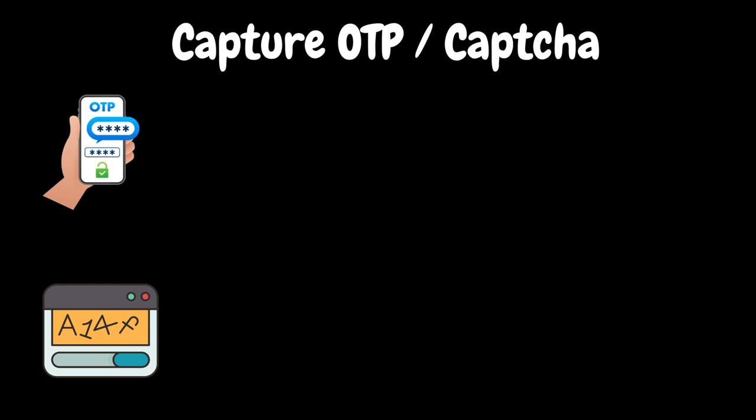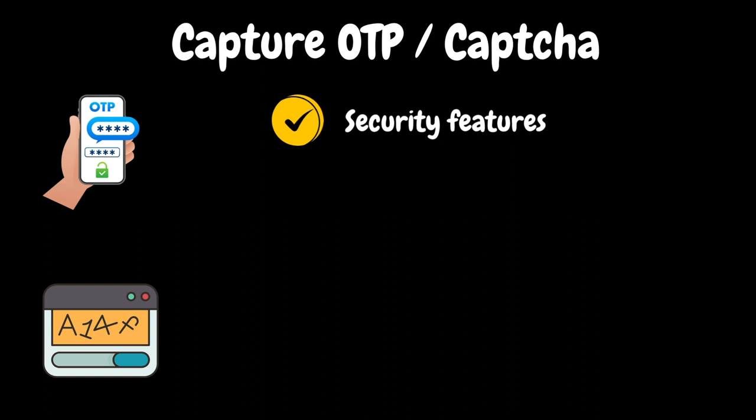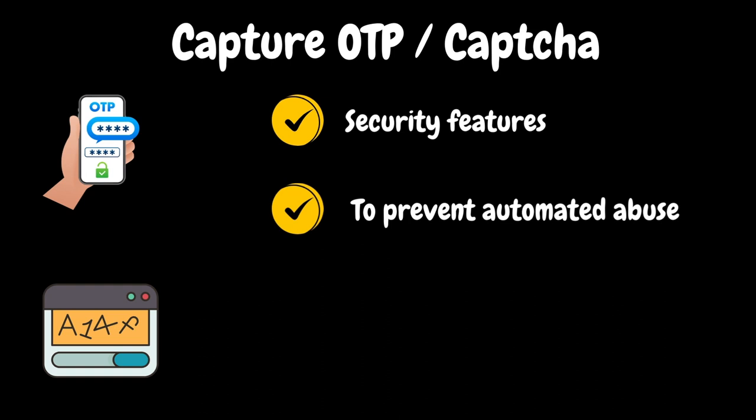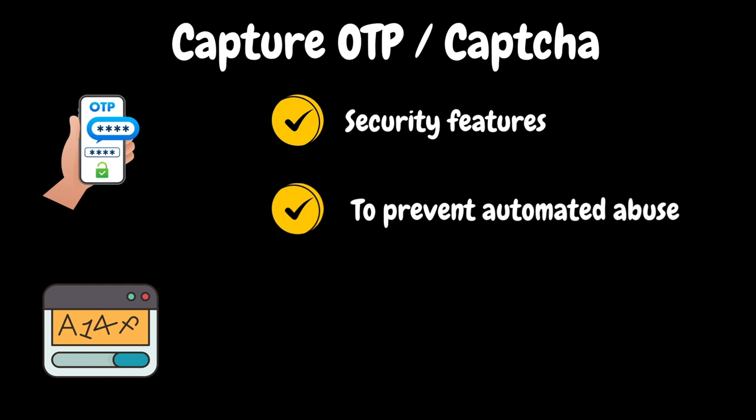CAPTCHA is designed to bypass automated programs. Both OTP and CAPTCHA are security features that provide an additional layer of security for web applications, ensuring requests come from genuine human users rather than automated tools.